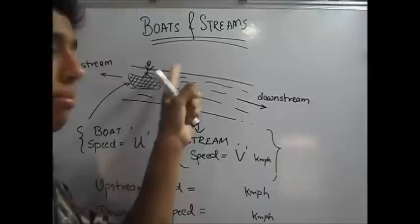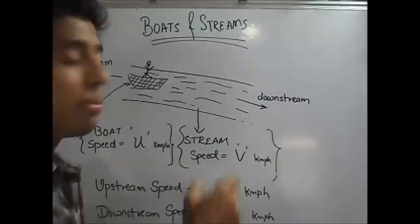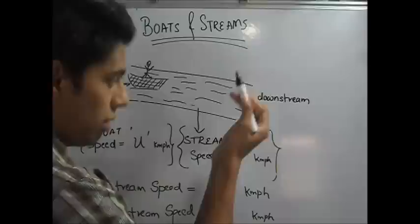Let us assume that you are in a boat that has a boat speed of u kilometers per hour, and you are riding in a stream that has a stream speed of v kilometers per hour. Let us take the first condition. You are riding up the stream. The stream is flowing downwards.